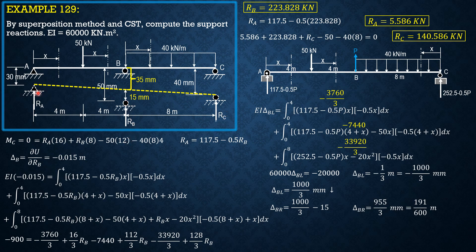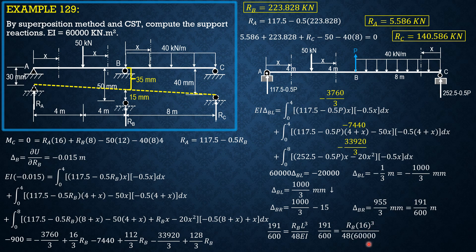From previous results, for a simply supported beam with a concentrated load P at the center, the deflection is PL³/(48EI). In this case P is RB, applied at the center — 8 meters from each support — and L equals 16 m. So: 191/600 = RB times 16³ divided by (48 times 60,000). Solving this equation should give RB equal to 223.828 kilonewtons, confirming the earlier result.